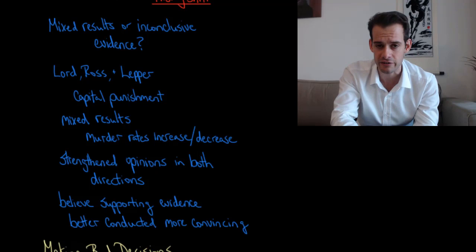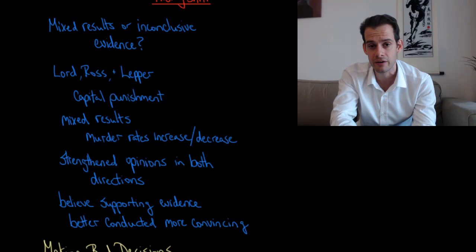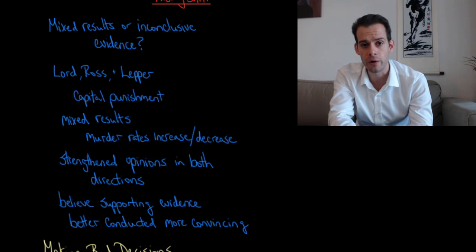And rather than moving these two groups to the center, as you might expect, where they might say, well, it looks like there's evidence on both sides, I guess a more reasonable position would be closer to the middle. Instead, this mix of evidence actually strengthened the opinions of both of the groups. It actually further polarized them. So how is this happening?